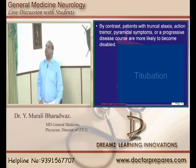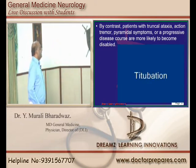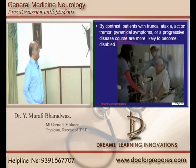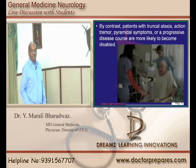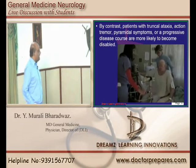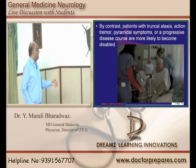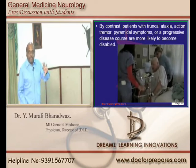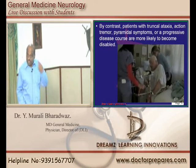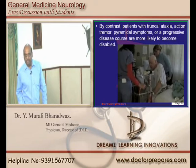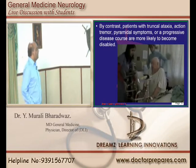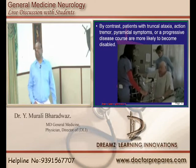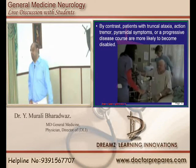Bad prognostic features include titubation and truncal ataxia — if cerebellar dysfunction is present, that indicates a bad prognosis. Similarly, pyramidal symptoms such as corticospinal pathway involvement, Babinski sign positivity, or hemiplegia are bad features.